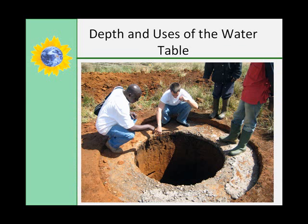The depth of the water table depends on the rainfall season, slope of the ground, thickness of the soil, climate, and the time between rainfalls. In swamps, lakes, and rivers, the water table is exposed at the surface. In deserts, it may be hundreds of meters down. In fields and farmland, it is a few meters down, and in hilly country, the water table lies at the surface of the valleys.